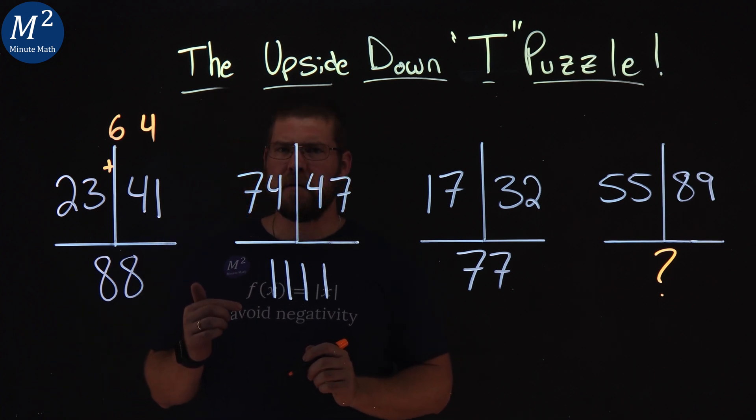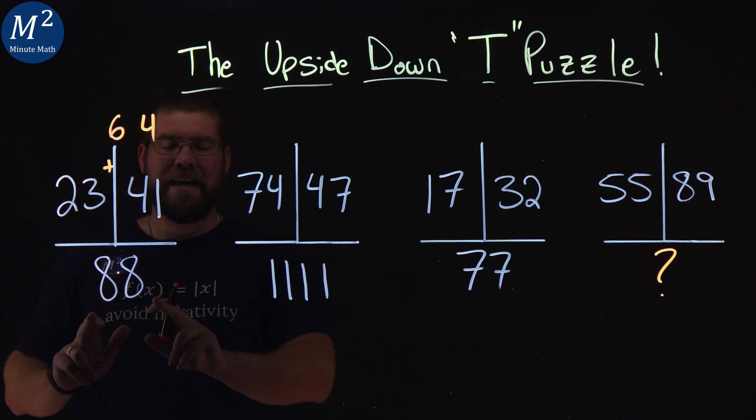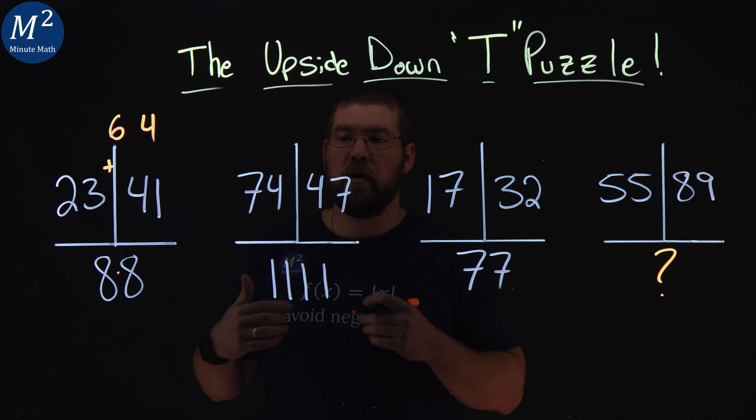Well, 64, that's 8 times 8, isn't it? 64 is 8 times 8. Let's see if that pattern keeps holding.